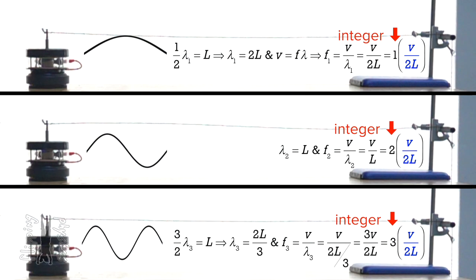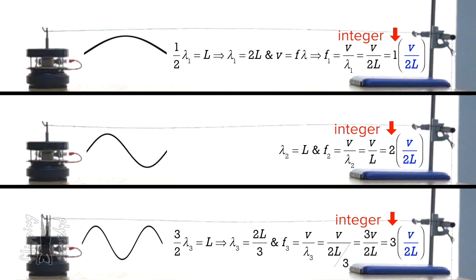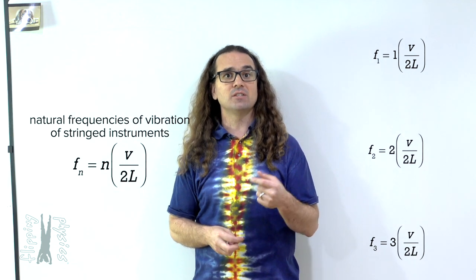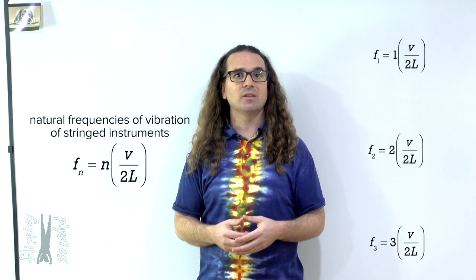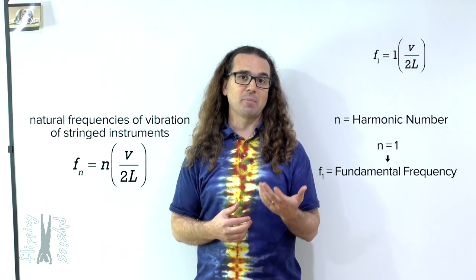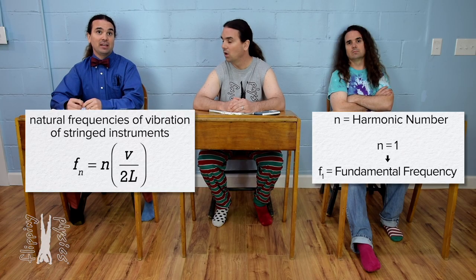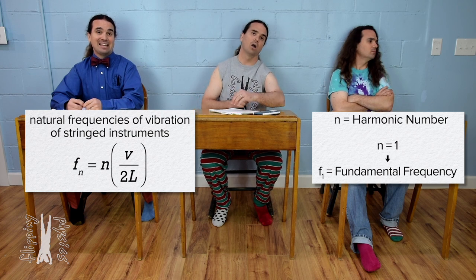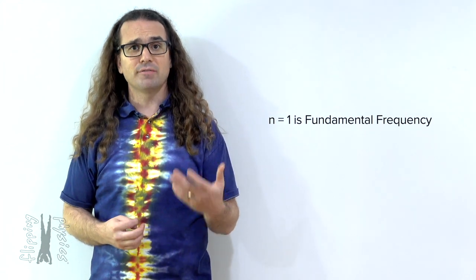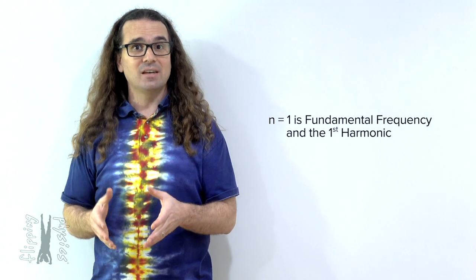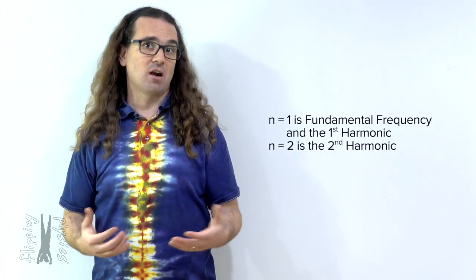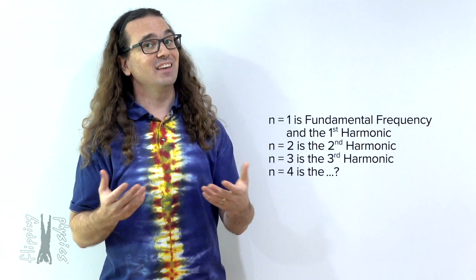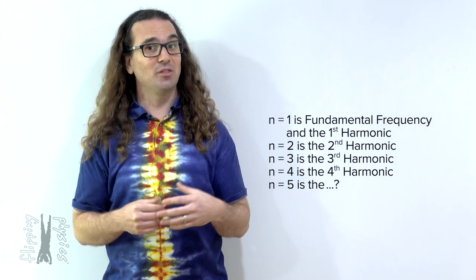Each frequency is an integer times the quantity speed divided by two times the length of the string. The frequency of the sound created by a stringed instrument equals n times the speed of the wave on the string divided by the quantity two times the length of the string. The variable n is called the harmonic number. When n equals one, the frequency is called the fundamental frequency — the first harmonic. When n equals two, that is the second harmonic; n equals three is the third harmonic; n equals four is the fourth harmonic; n equals five is the fifth harmonic.